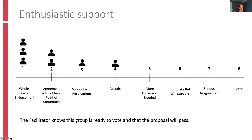Here's an example where after using the gradients of agreement it's clear the group is ready to go to a vote and the proposal is going to pass. Maybe the abstention can go one way or the other, but this group is in a good place in terms of being able to reach closure.